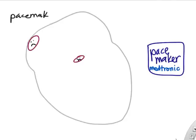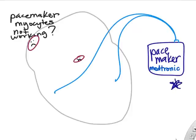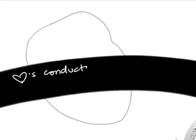In some cases, pacemaker regions of the heart don't work properly, and a patient may need an implantable pacemaker — a battery-operated unit that paces the heart and tells the ventricles when to contract.